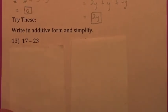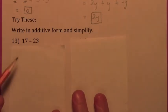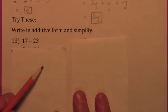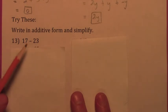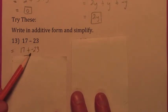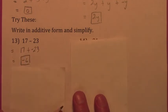This seems like a lot of writing, but it's important to know what the definitions are before you start using shortcuts. So let's just go ahead and show all the steps. Additive form: it becomes 17 plus negative 23. Final answer is negative six.